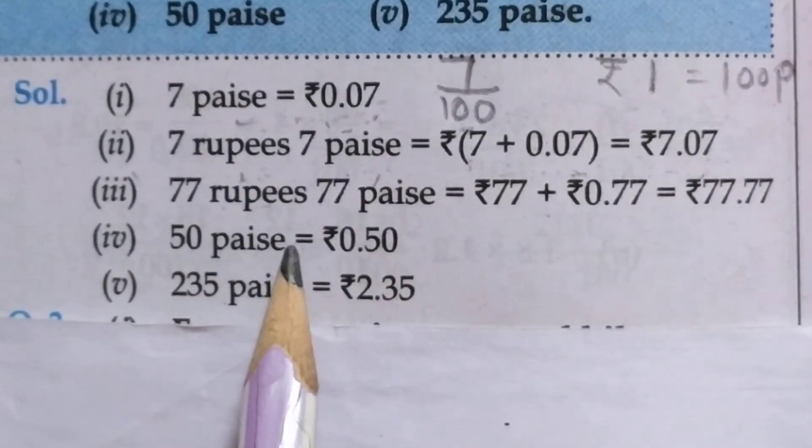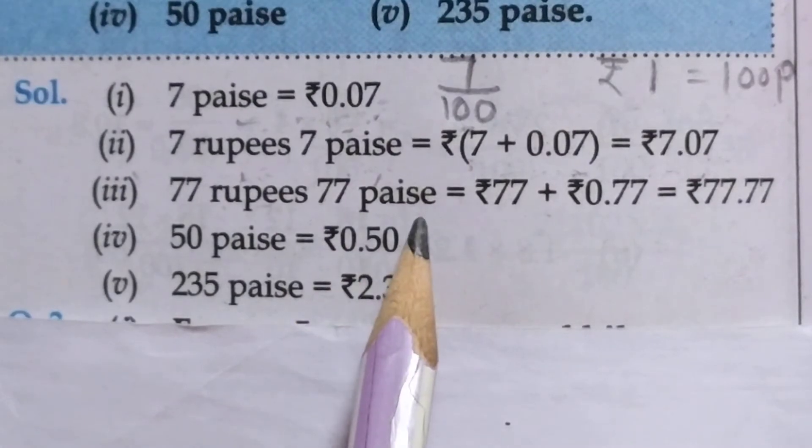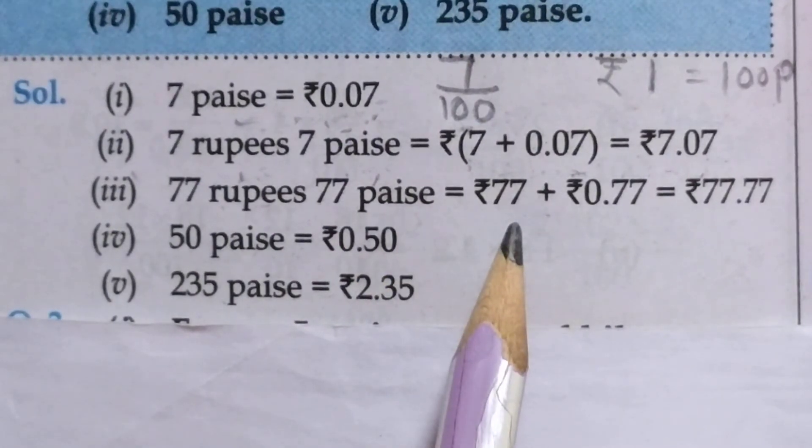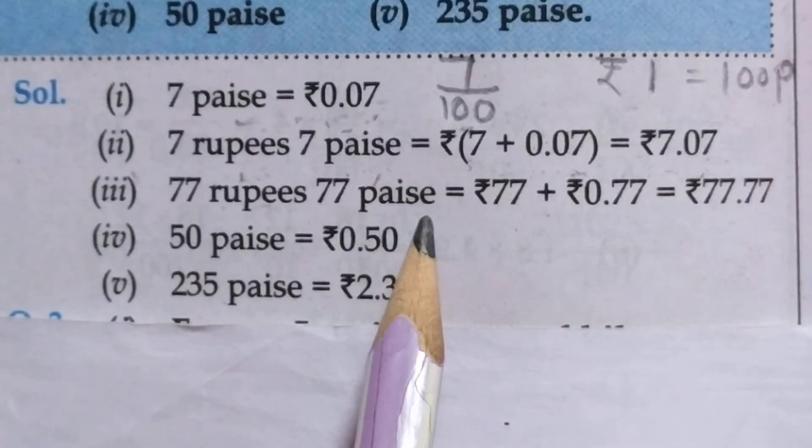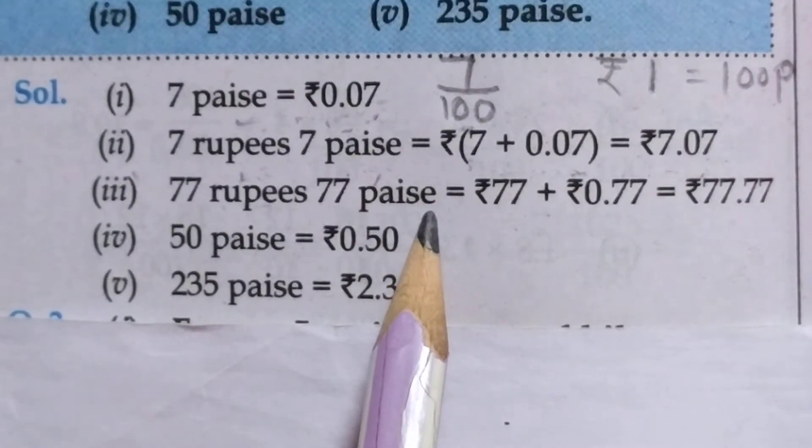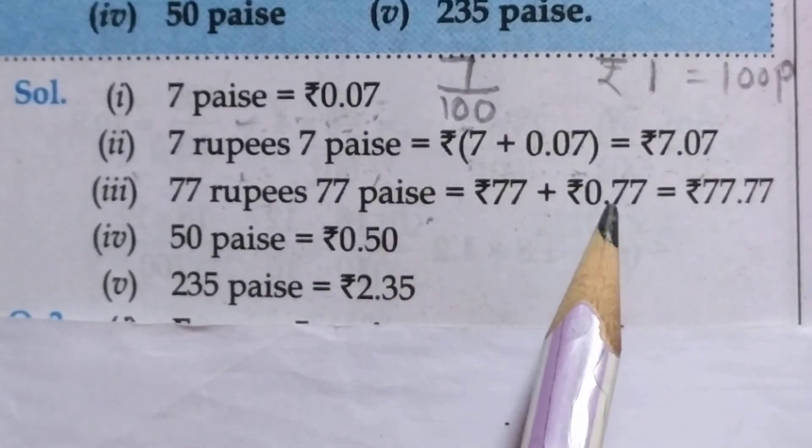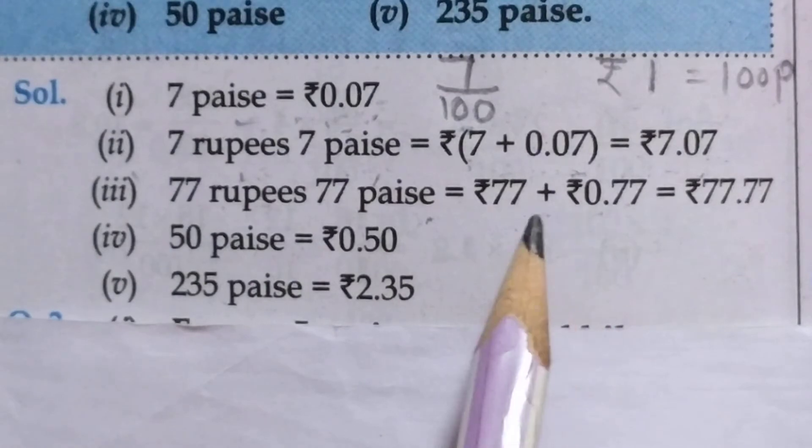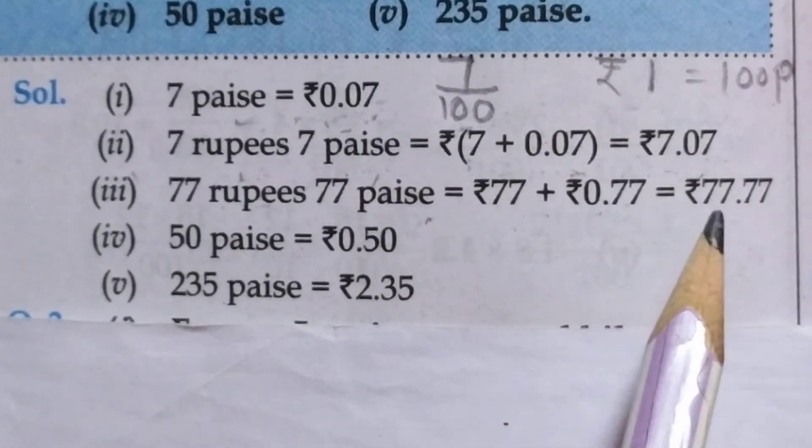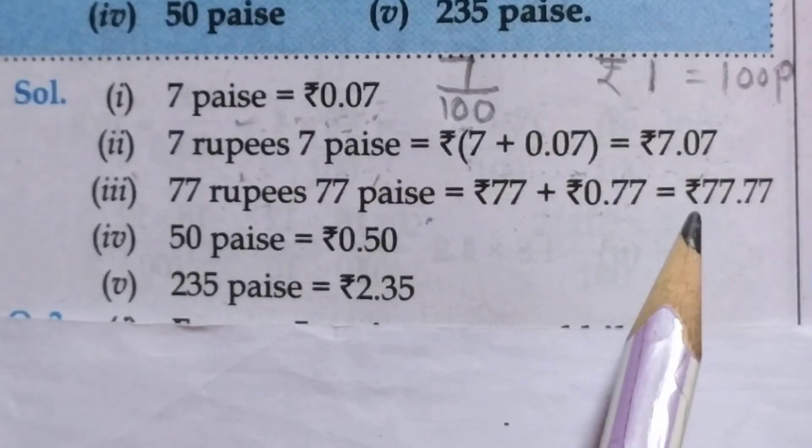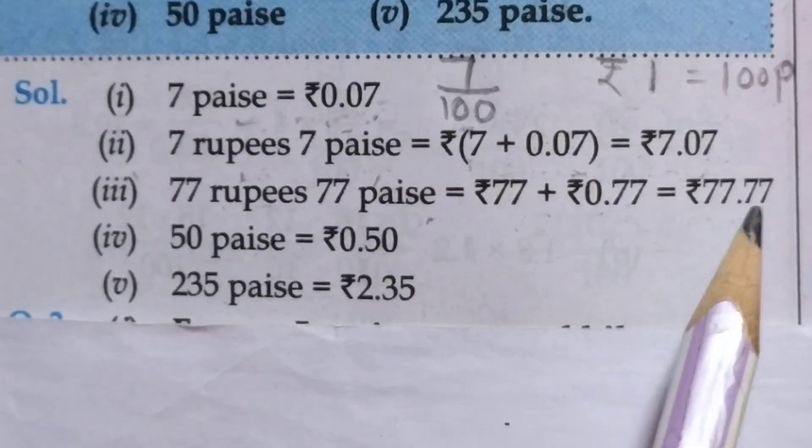Now, third one, 77 rupees and 77 paise. So, 77 rupees as it is. 77 paise, convert them into rupees. So, divide by 100. In 100, two zeros are there. So put the point after two digits. 1, 2. The point will be here. Now, rupees 77 plus 0.77. The answer will be rupees 77.77.